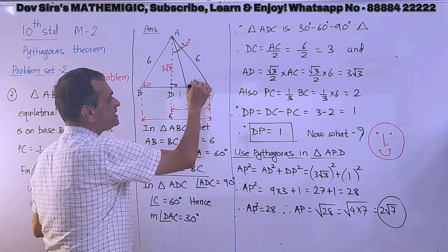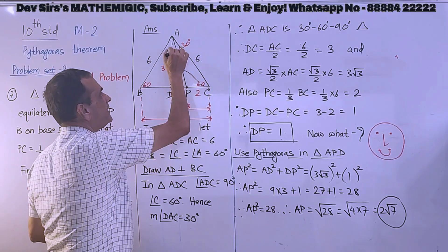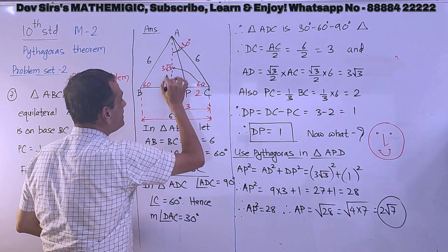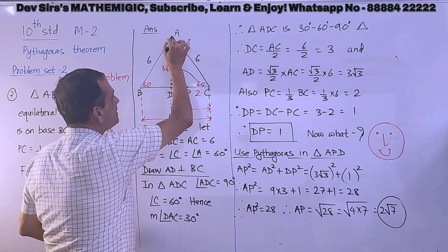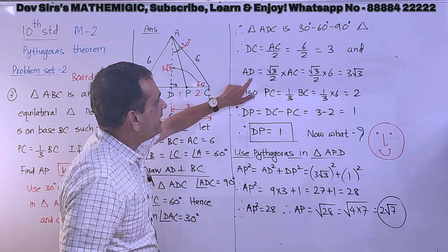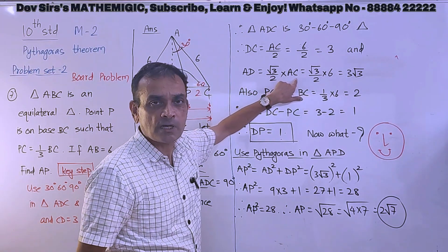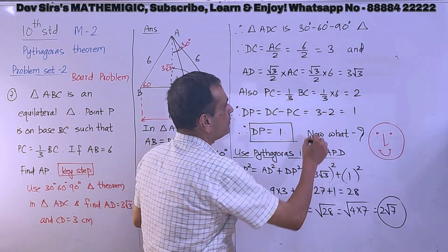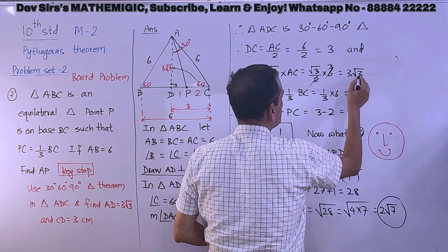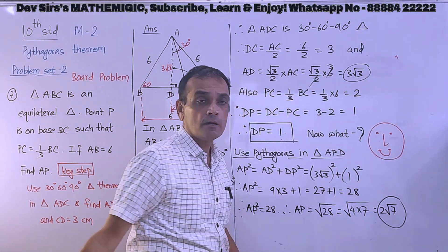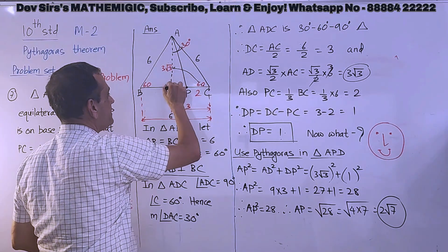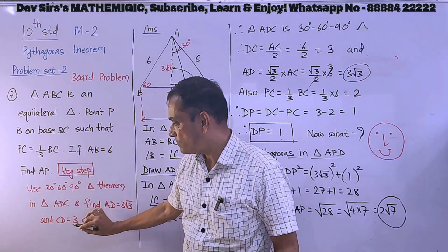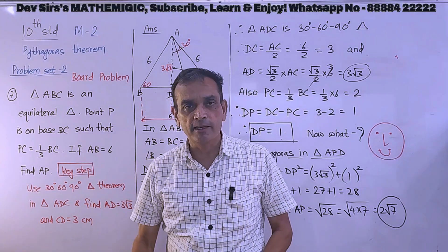Second property of 30-60-90 triangle theorem - side opposite to 60 degrees is root 3 by 2 times the hypotenuse. In triangle ADC, side opposite to 60 is AD. So AD is equal to root 3 by 2 times the hypotenuse AC, which is root 3 by 2 into 6. 2 threes are 6, so root 3 into 3 gives you 3 root 3. We got AD as 3 root 3. We have achieved what we wanted - CD is found, AD is found.